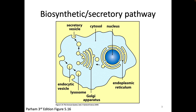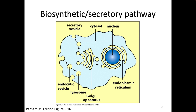So this is a view of the biosynthetic secretory pathway, sometimes also known as the secretory pathway or the endocytic pathway, which includes the ER, the Golgi, and then these secretory vesicles that are bringing things to the outside of the cell, as well as endocytic vesicles that are bringing things into the cell, potentially to the lysosome.